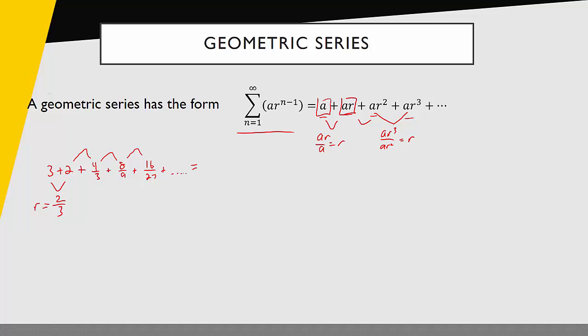The only other value I need is a. A is always the first term of the series, so a is 3. My r value is 2 thirds. And the rest of the pieces I just pull from my template. So I've identified this series as geometric and rewritten it into sigma notation.